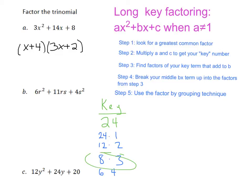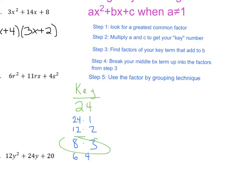So my next step here is going to be to break my middle BX term up into the factors from step 3. So let's go over here. I'm going to recopy this problem. And it's going to be 6R² + 11RS + 4S².